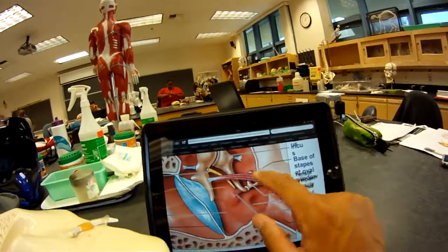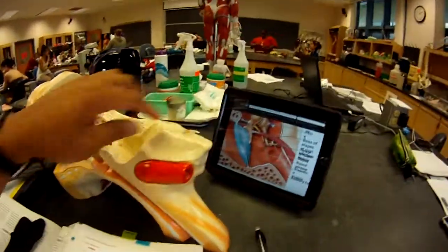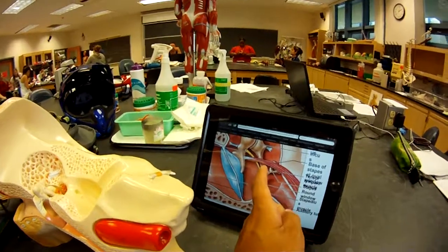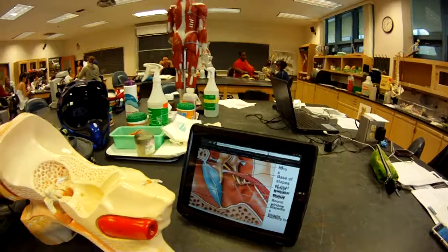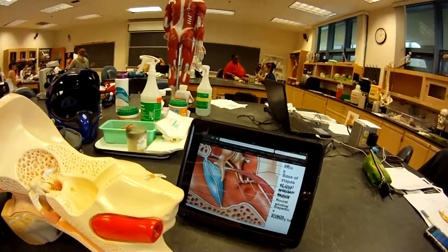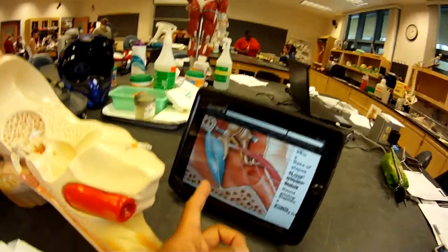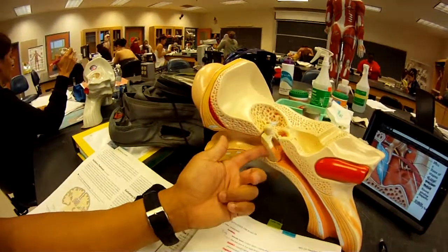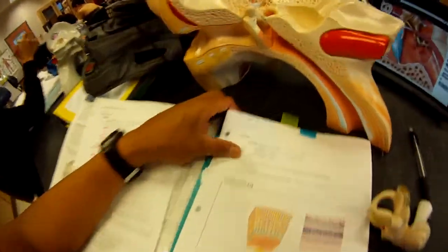What these muscles do - the function of these muscles is to protect the ear from loud noises. So it protects the tympanic membrane or the inner ear.